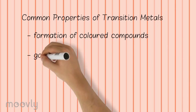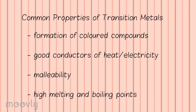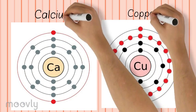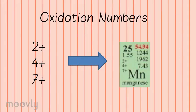Some common properties of these metals include the formation of colored compounds, they're good conductors of heat and electricity, they're malleable, meaning they can be hammered or bent into shape easily, and they have high melting and boiling points. One more unique property is the way they bond with other elements. Most elements use their last shell of electrons to bond, like calcium, but transition metals can use the last shell and the second last shell to bond, like copper. This allows them to have multiple oxidation numbers — for example, manganese is able to form ions with charges of 2+, 4+, and 7+. Lastly, transition metals tend to be a lot less reactive than regular metals and nonmetals, except noble gases.